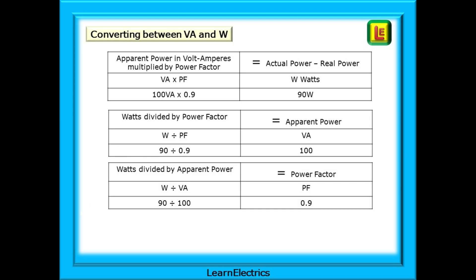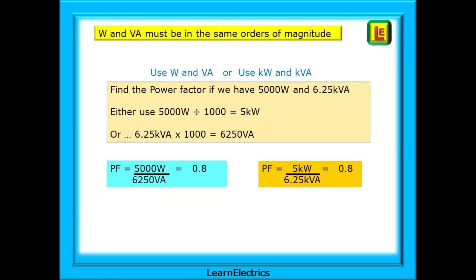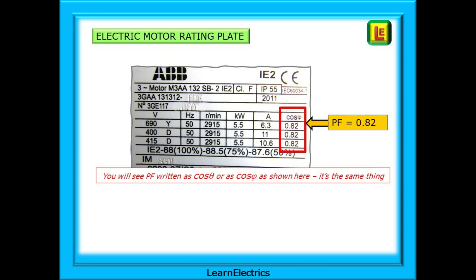This comparison chart should help — pause the video and study it. If we know any two values of VA, PF or W, we can always find the third. When doing calculations, W and VA must be in the same orders of magnitude — use watts and volt amperes, or kilowatts and kilovolt amperes. For example: 5000 watts and 6.25 kVA — convert 5000 watts to 5 kilowatts, or convert 6.25 kVA to 6250 VA. Either way, the answer is a power factor of 0.8.